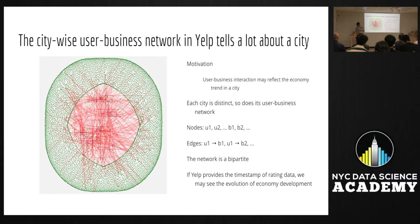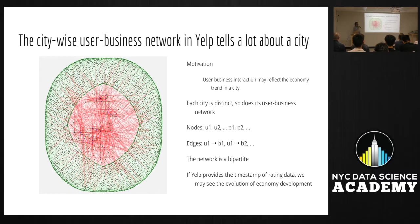Before the demos, this is the user-business interaction graph — it's dynamic. Each node is either a user or a business. From a high-level view, I want to see what a city looks like instead of looking at each restaurant, library, or museum individually. There are so many nodes in this data, so I randomly select some of them.